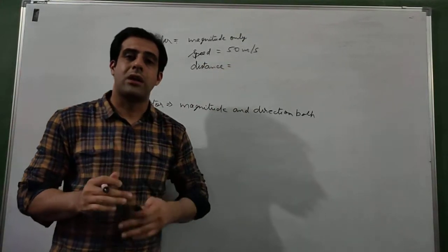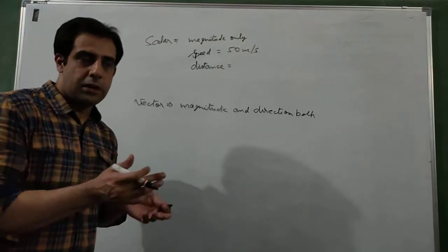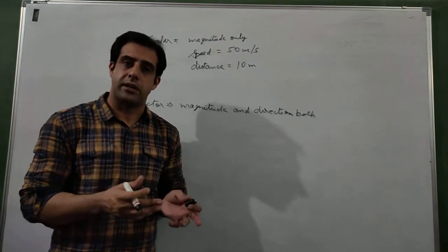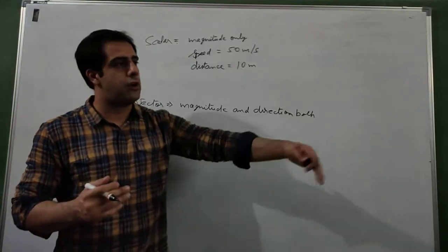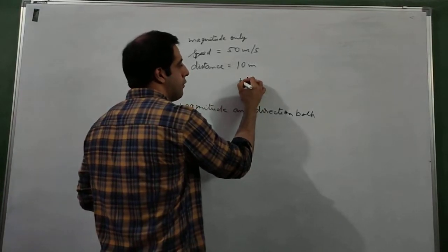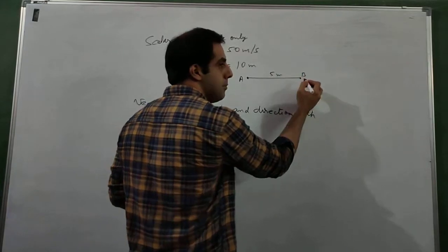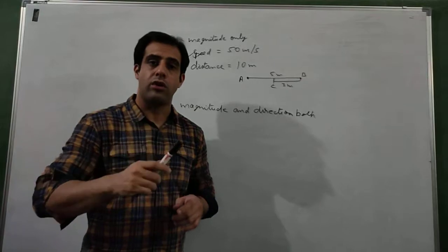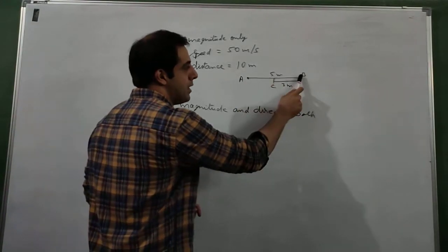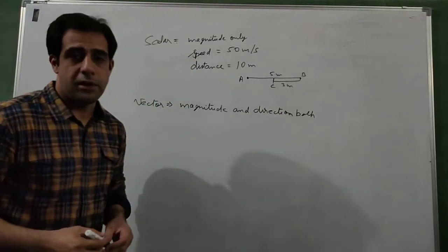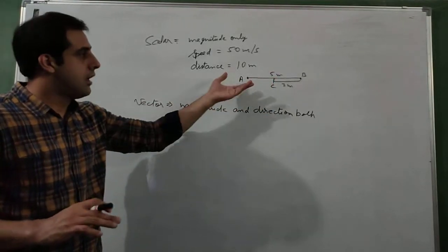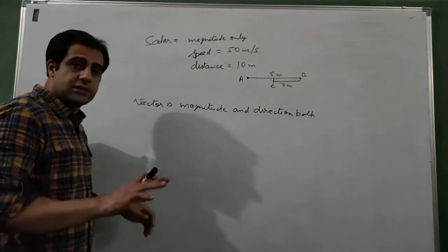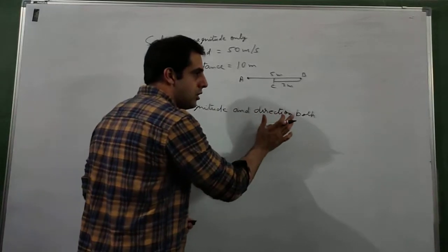Distance is another scalar example. Distance is the total length of the path and does not depend on direction — it can be curved. For example, a body starts from point A, goes 5 meters to point B, then returns 3 meters to point C. The total distance is A to B plus B to C, which is 5 plus 3 equals 8 meters. It does not depend on direction, so distance is a scalar quantity.